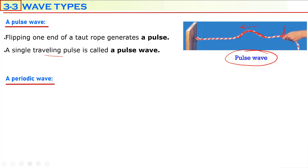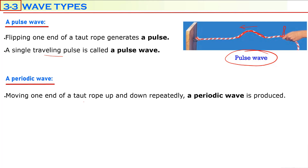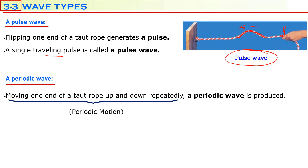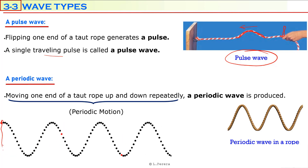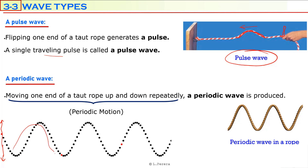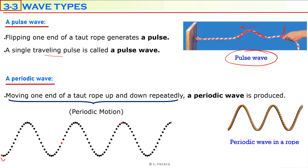But if you continue shaking one end of the rope up and down continuously — moving one end of a rope up and down repeatedly — a periodic wave is produced. If the end of the rope is in periodic motion, you are going to produce a periodic wave. There are many pulses one after another, all traveling in one direction. This is a picture of the periodic wave in a rope — there are several pulses produced when you move your hand up and down.